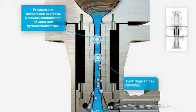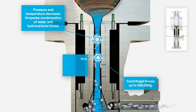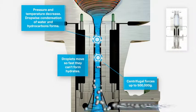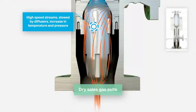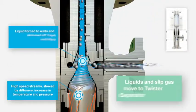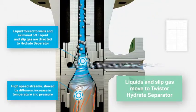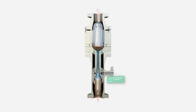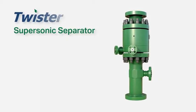The droplets travel down the Laval nozzle at such high velocity no hydrates can form. The dry gas exits as sales gas whilst the liquid is forced to the walls and is directed to the hydrate separator. The Twister supersonic separator is a compact and enclosed technology which requires little to no maintenance.